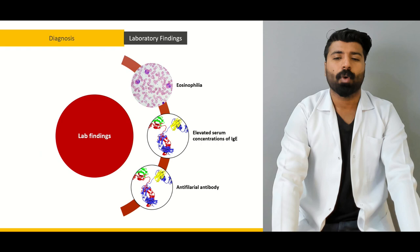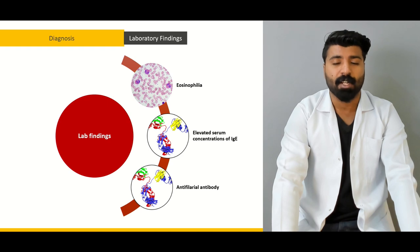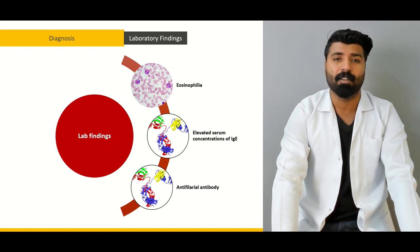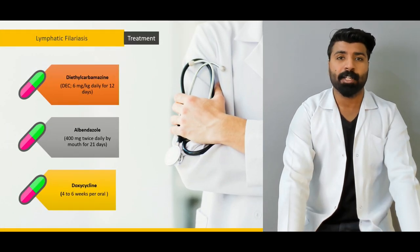Next, we're going to talk about those laboratory findings — what you'll look for regarding eosinophilia, raised IgE levels, and antifilarial antibodies. Finally, we're going to talk about the treatment modalities we have for this parasitic infection.